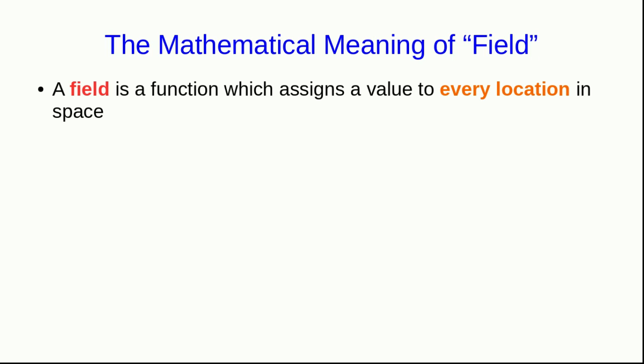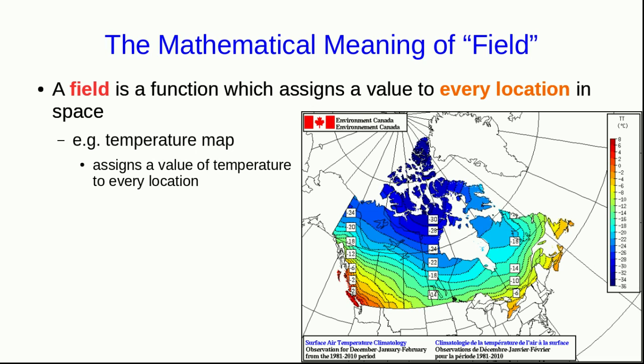So a field is just a function which assigns a value to every location in space. That may seem abstract, but you've actually seen them regularly. For example, a temperature map assigns a value of temperature to every location. So it is an example of a field in the mathematical sense. Notice that temperature is a scalar, and so this is a scalar field.